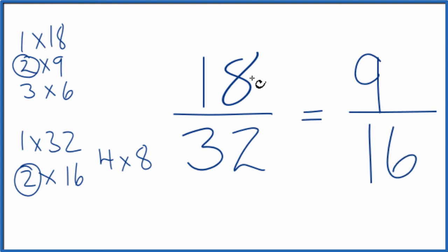These are equivalent fractions. If you divide 18 by 32 and 9 by 16, you'll get the same number. We've just reduced or simplified 18 over 32 down to 9 over 16.